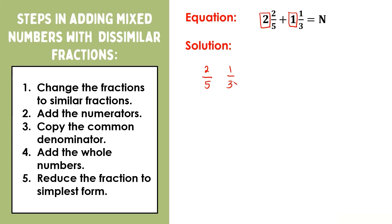Using the butterfly method, we will have 3 × 2 = 6, and 5 × 1 = 5. Then 5 × 3 = 15. We now have 6/15 and 5/15.